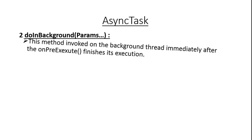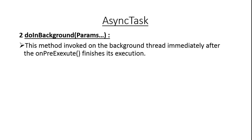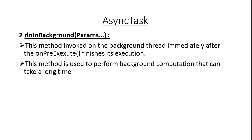Here is the second method: doInBackground. This method is invoked on the background thread immediately after onPreExecute finishes its execution. This is the only method that runs on the background thread — all other methods execute within the UI thread. After finishing onPreExecute, the Android system calls doInBackground and you place the background task within this method. It is used to perform background computation that can take a long time, for example downloading a file from the internet.